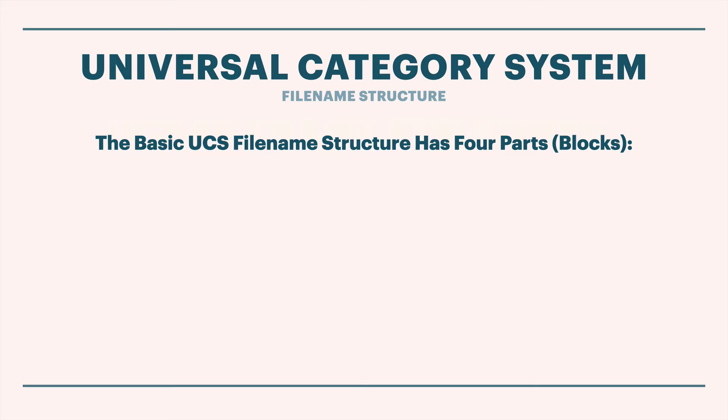The basic file name structure has four components - we're calling them blocks. The first one is the cat ID. We've already looked at the list and we know what the cat ID is - it's the abbreviated form of the category and subcategory. So right at the head of our file name, we're going to place the category ID. We're also going to add an effects name, which is a title of the sound, a creator ID representing who created the sound, and a source ID indicating where the sound came from. These are the four blocks of the basic default file name in our system.